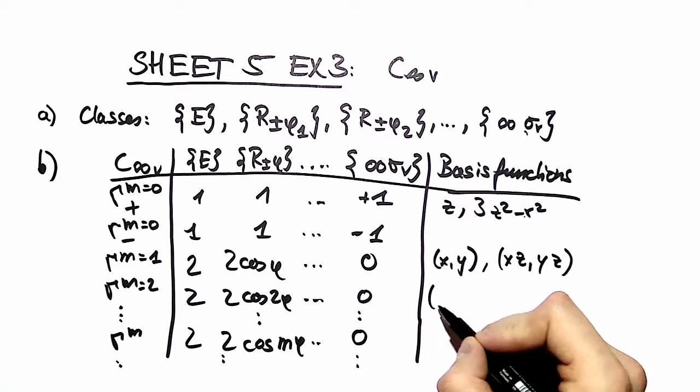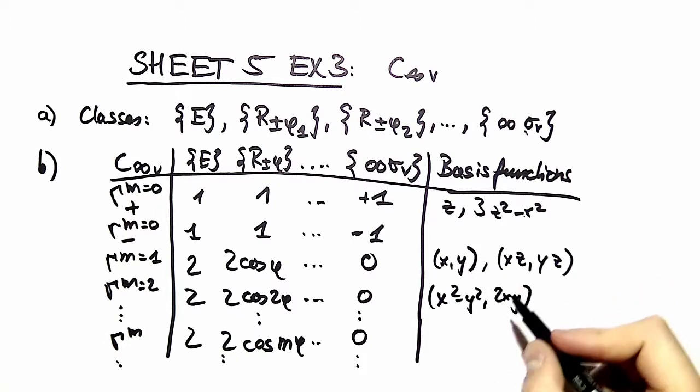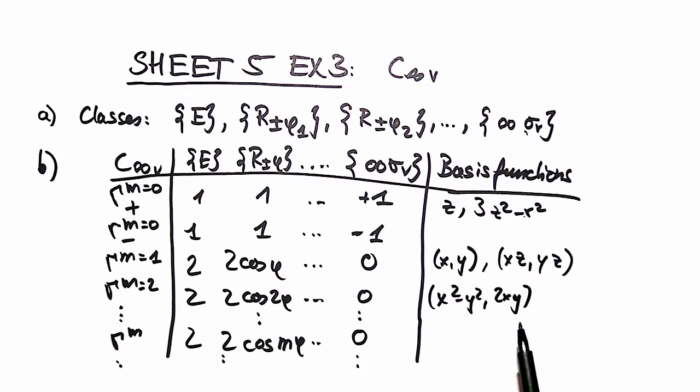For gamma m equal to two, we obtain x squared minus y squared, comma two x y. This is kind of tricky to get - this is one where you should know it.